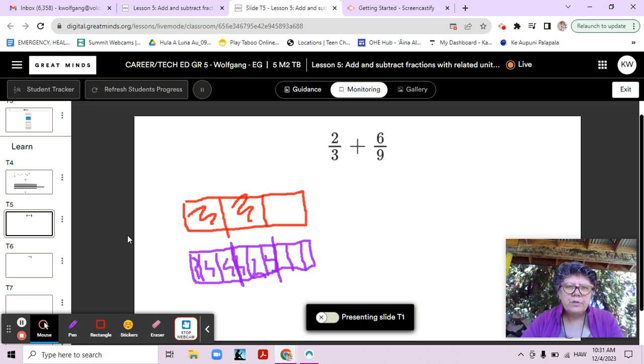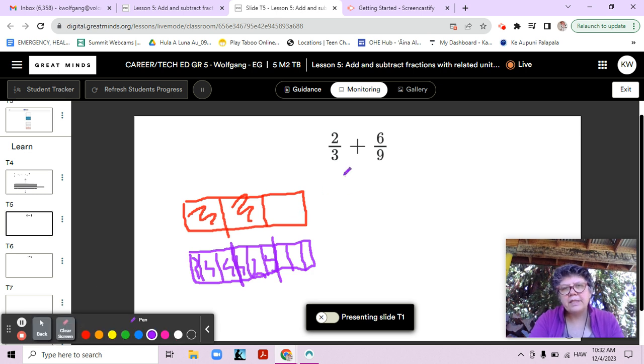Okay, so two-thirds plus six-ninths. You notice that six-ninths is also equal to how many-thirds? Do you see that it's also equal to two-thirds, right? Or we could change them both to ninths. We kind of have some creativity here, right? So how could I change two-thirds into ninths?